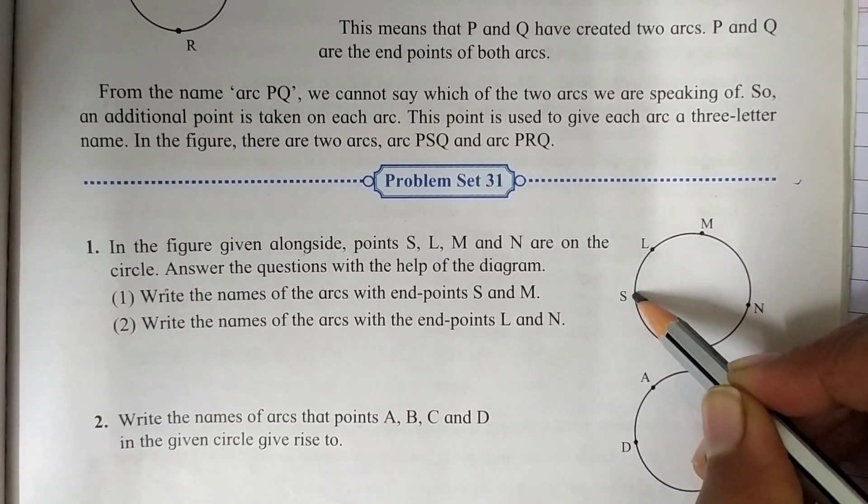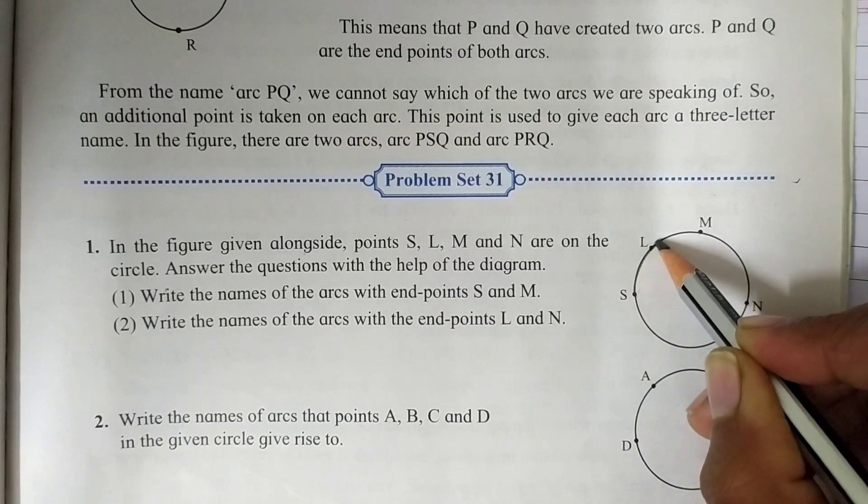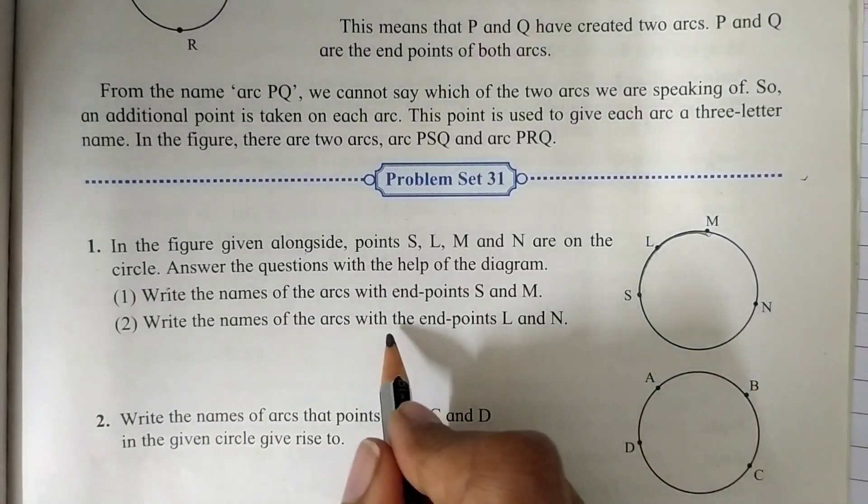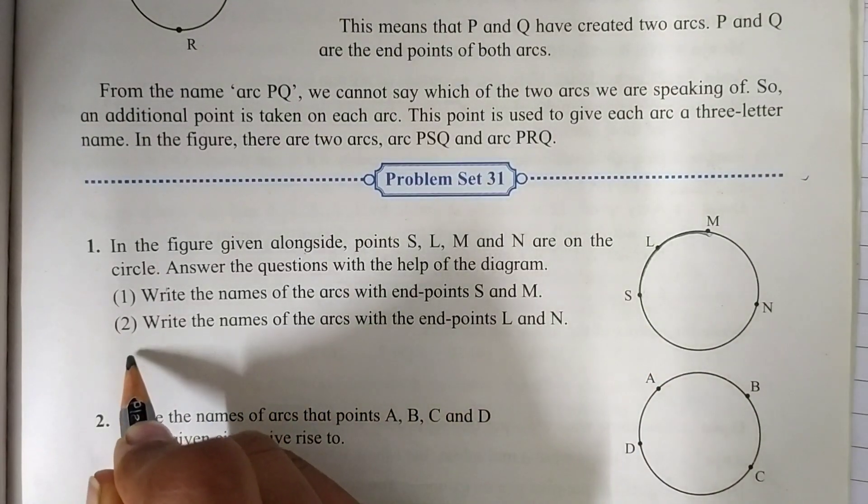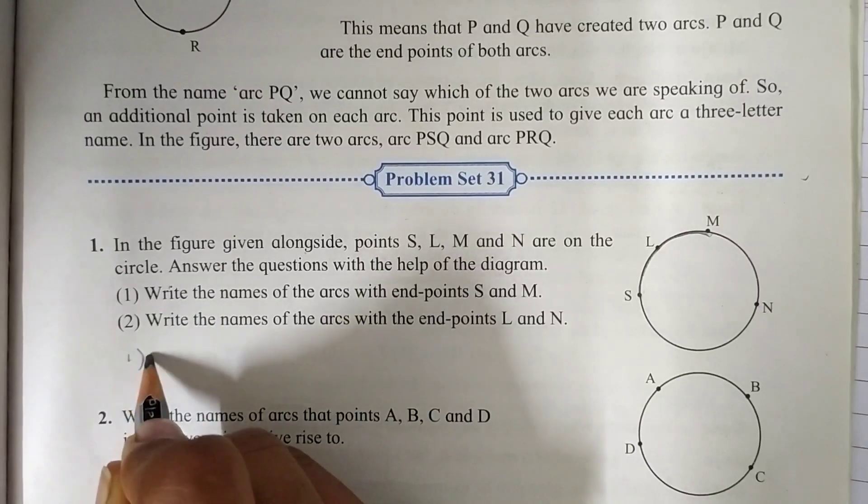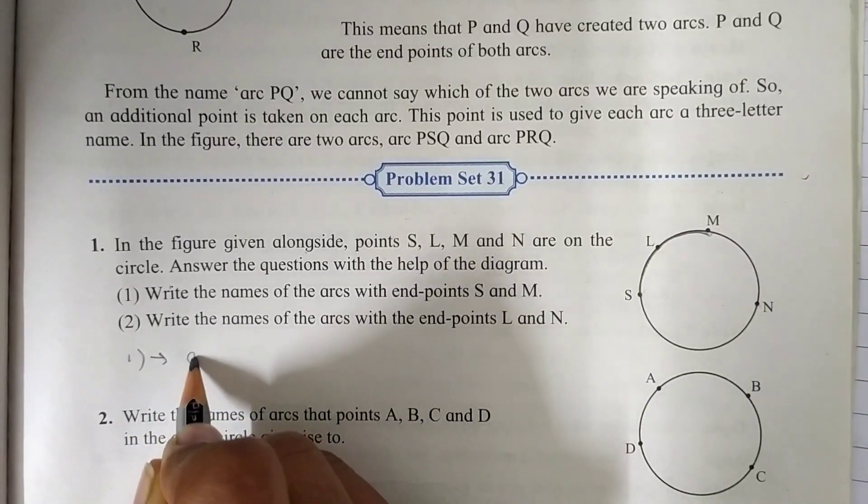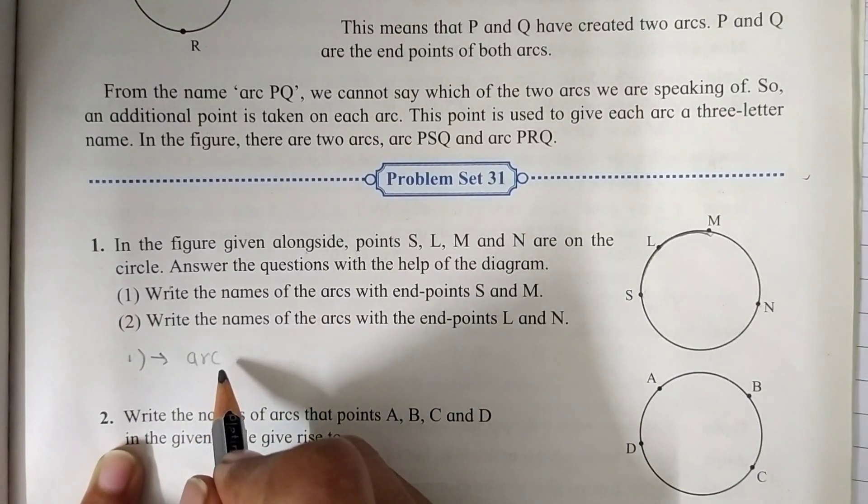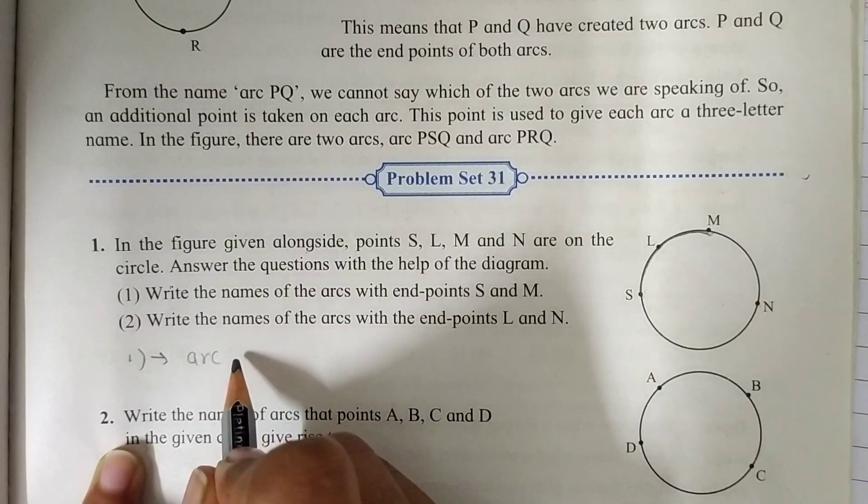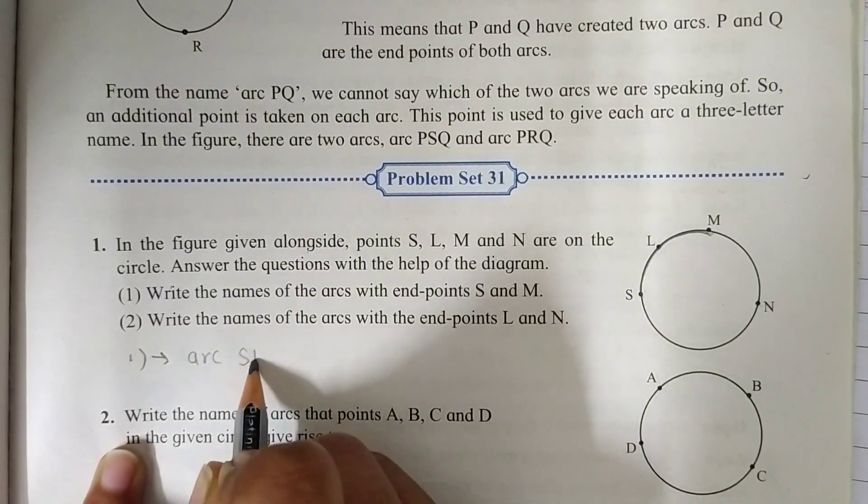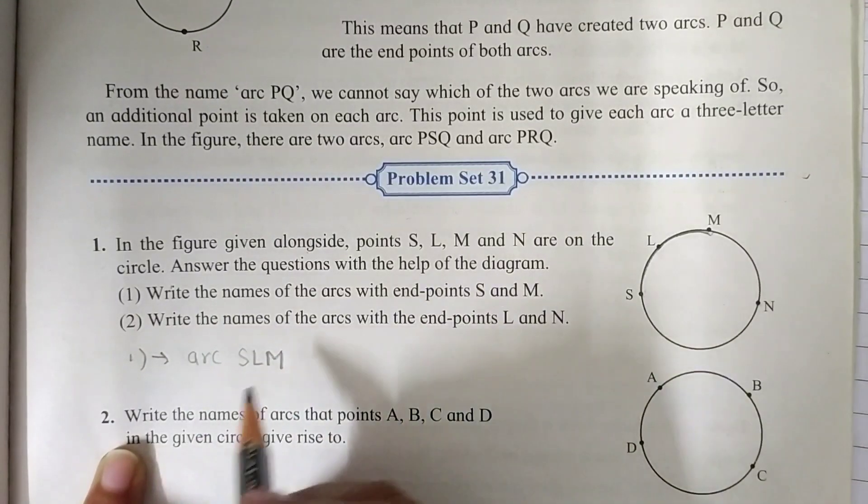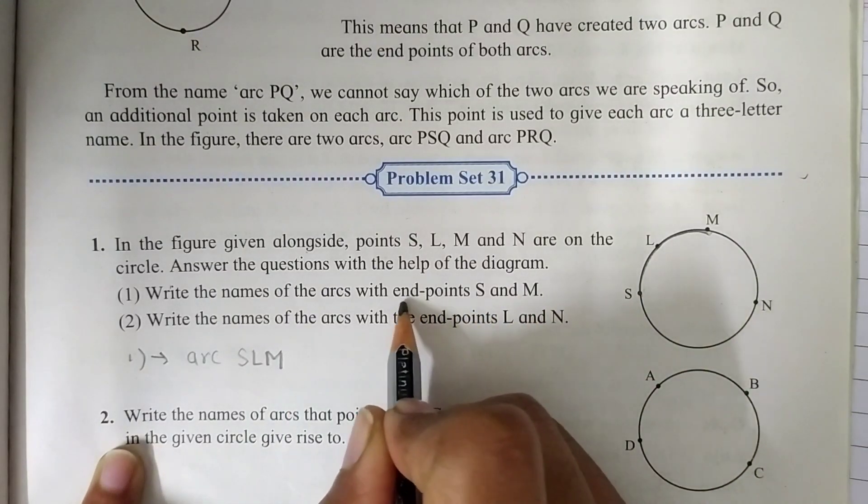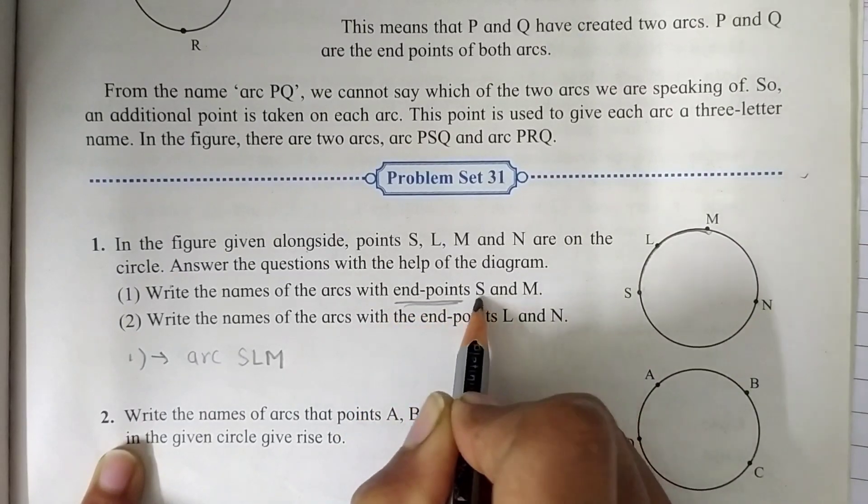We have to write the names of the arc. We can see here S, L and M. This is the first arc. Write the answer for our first question. You have to write in your notebook. I am going to show you so you can easily understand. The second arc is S, L, M.